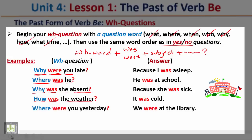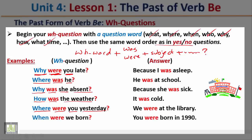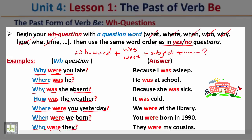'Where were you yesterday?' The question starts with the question word, followed by the verb, then the subject. The answer: we were at the library. 'When were you born?' The question starts with the question word, then the verb, then the subject. The answer: you were born in 1990. 'Who were they?' Start with the question word, followed by the verb, then the subject. The answer: they were my cousins.